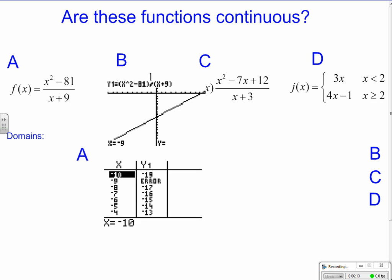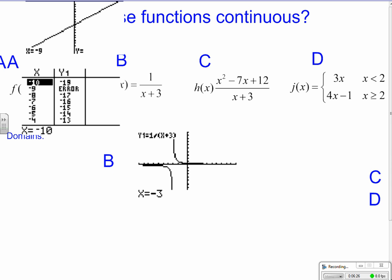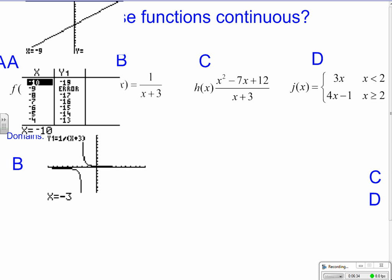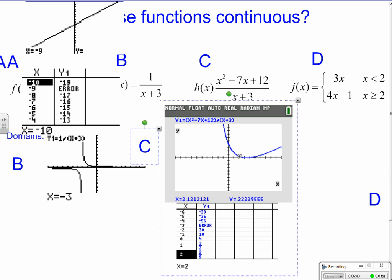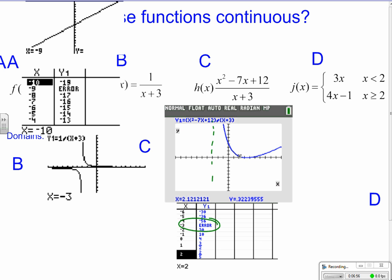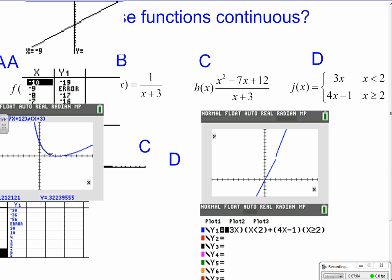Looking at the graphs: for letter A, the function is discontinuous at negative 9 because f of negative 9 is not defined. For B, there is a vertical asymptote at x equals negative 3 — that was a domain issue. For C, analyzing the function we find a vertical asymptote at negative 3, and notice the error that appears in the table as a domain issue. For D, the piecewise function left off at 6 and picked up again at 7, and you can see that gap.